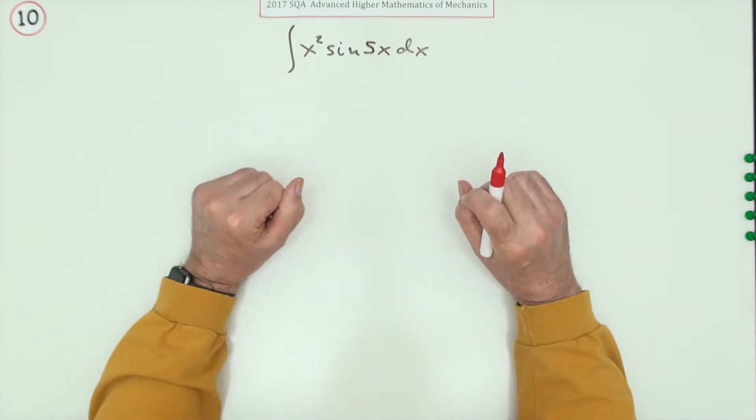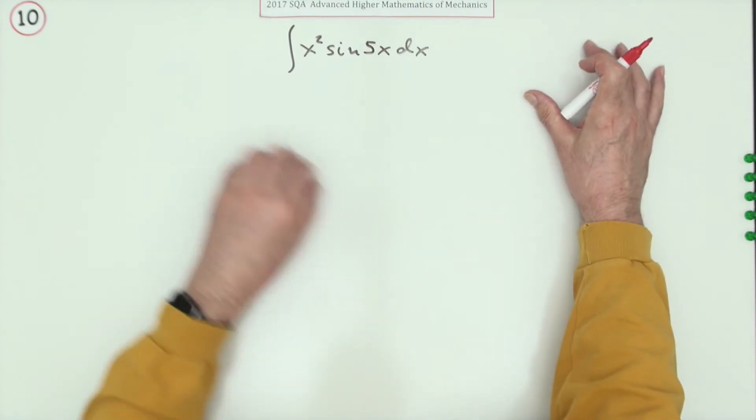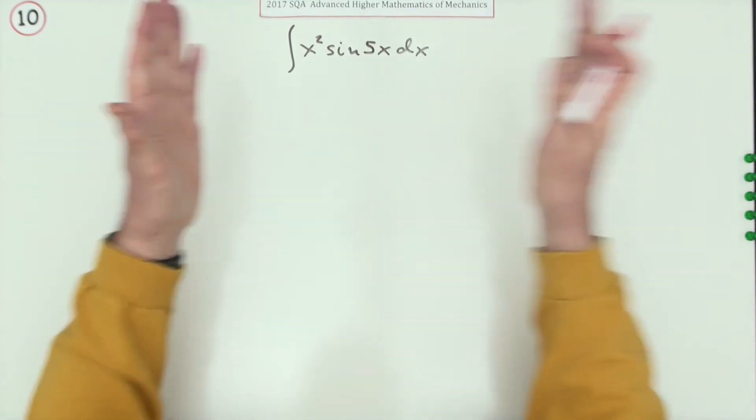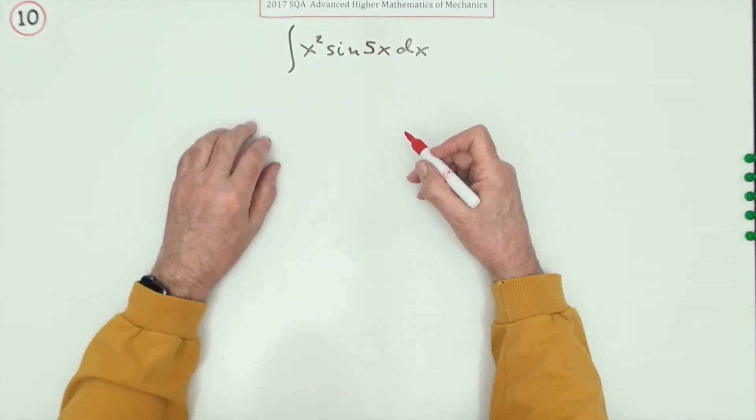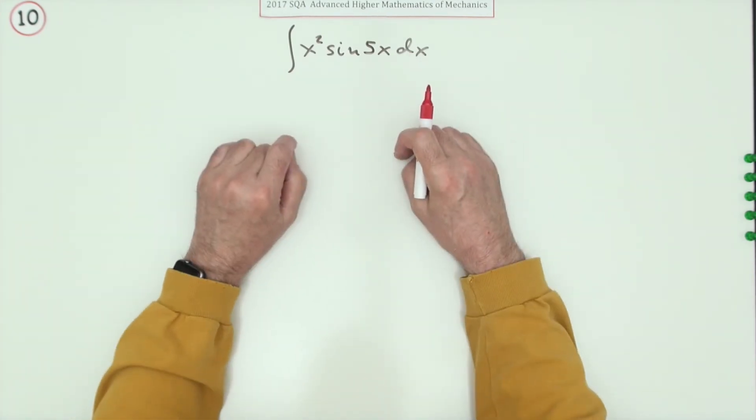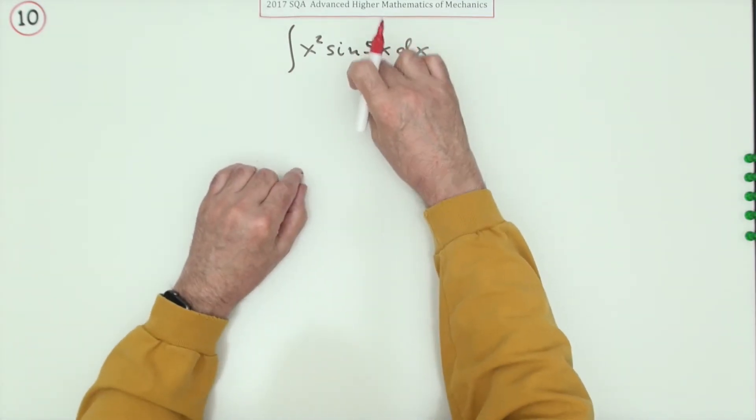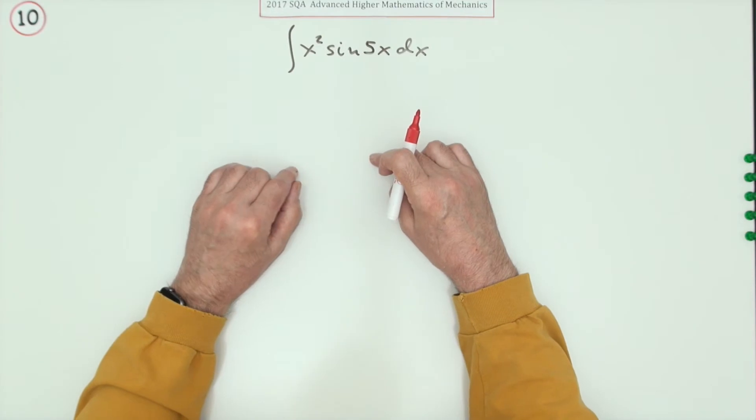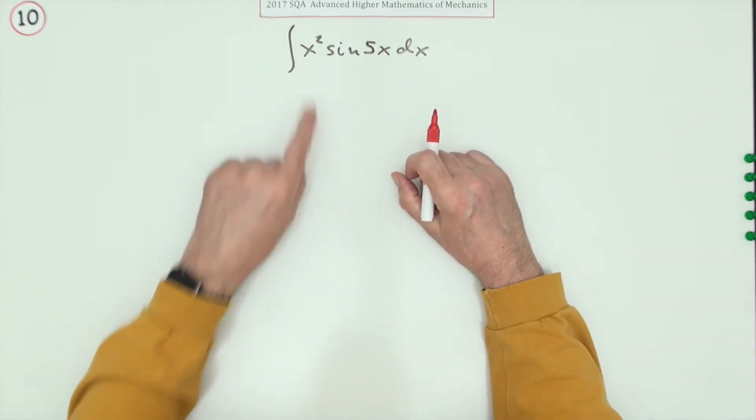It's the same as the product rule. Each of the factors is dealt with one at a time while the other one waits. The procedure is choose one to differentiate and one to integrate. Now integrating and differentiating sine will make no difference, it'll just keep going through sine cos sine cos forever.